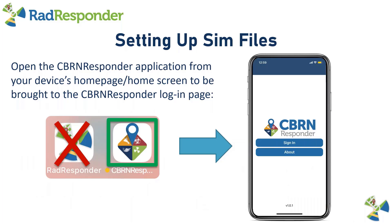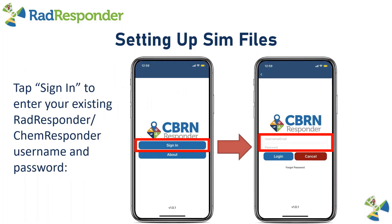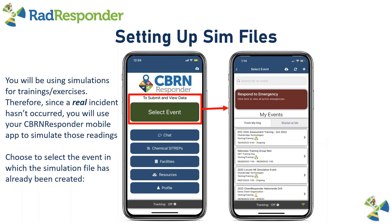Once you have your Seabird Responder Mobile Application, open it up. If you have not logged in, go ahead and sign in using your existing RAD Responder or Seabird Responder credentials. Select sign in, enter your username and password, and log in to be brought to the Seabird Responder homepage.